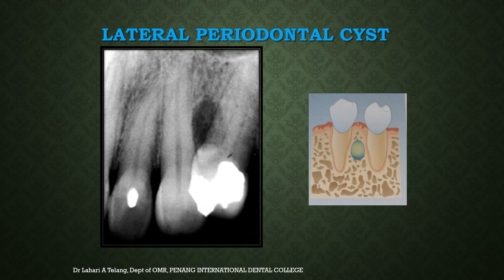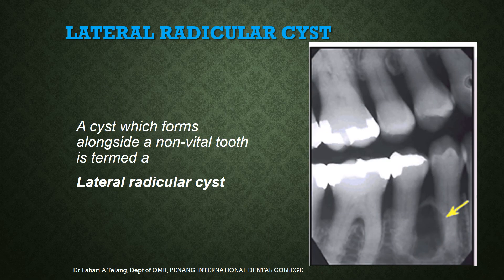Next is a lateral periodontal cyst — a cyst that arises in the periodontium or periodontal ligament space and is located between the roots of two teeth. This example shows a well-defined radiolucency between the canine and premolar region of the maxilla. A lateral radicular cyst should not be confused with a lateral periodontal cyst; it forms along a non-vital tooth and generally involves the accessory canals. It is important to check tooth vitality to ascertain whether the origin is pulpal or periodontal.